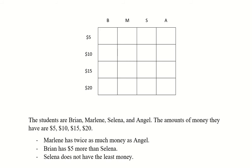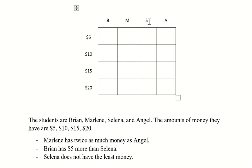So we have these three clues and we're going to use them to figure out who has which amount of money. We figure it out in this grid — this is a logic puzzle grid. Since we have four different people — Brian, Marlene, Selena, Angel — we have four different rows and four different columns. I've labeled each of my columns: B for Brian, M for Marlene, S for Selena, A for Angel. And then the rows going the other way are labeled five dollars, ten dollars, fifteen dollars, and twenty dollars.